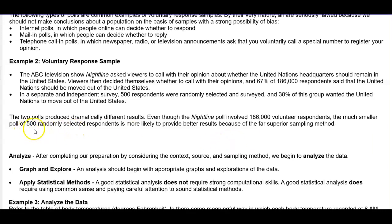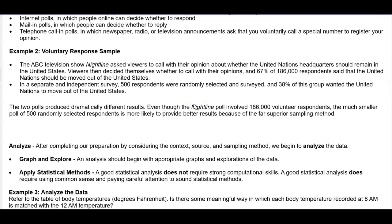Even though the Nightline poll involved 186,000 volunteer respondents, the much smaller poll of 500 randomly selected respondents is more likely to provide better results because of the far superior sampling method. In this case, the first one was a voluntary response, which means you're going to have more bias, whereas in a separate and independent survey they were randomly selected, therefore removing the bias.